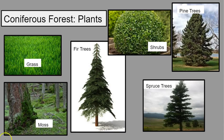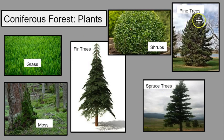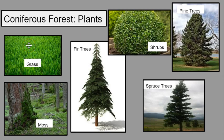Now we are going to look at the different plants, or flora, that can be found in the coniferous forests. There will definitely be different types of evergreen trees such as fir trees, spruce trees, and pine trees located in this biome. We can also see some low-lying shrubs as well as moss and very little grass in this biome, which we will be discussing later.